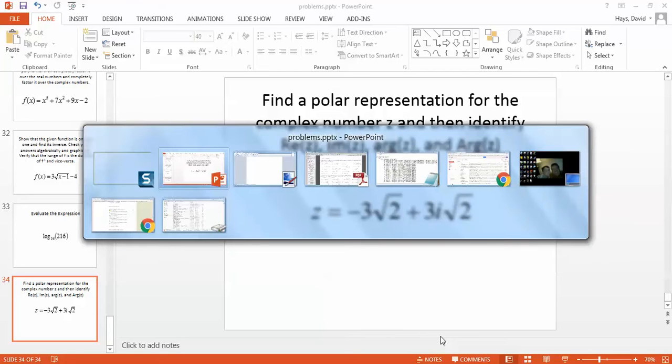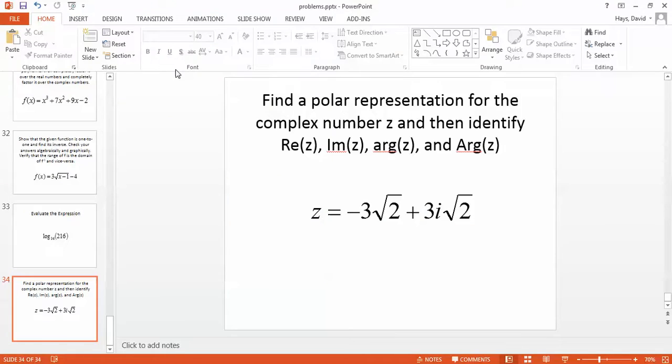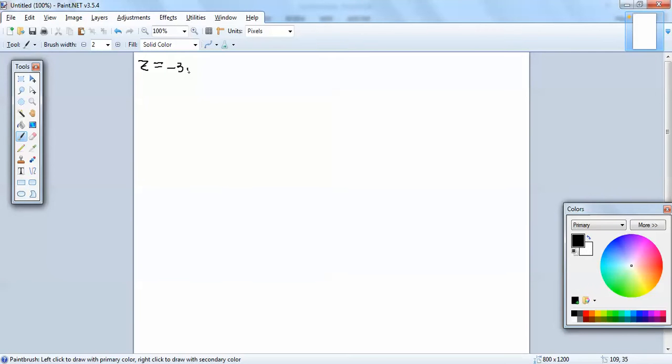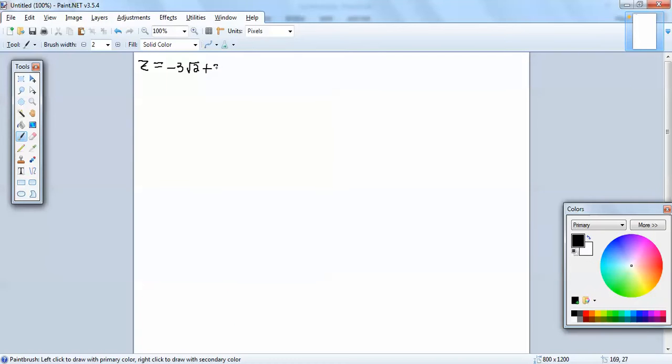Let's take a look at this problem. We've got z is equal to negative 3 square root of 2 plus 3i square root of 2. First off, let's identify our a and b. a is the real part, which is right here, and b is this part, excluding the i.